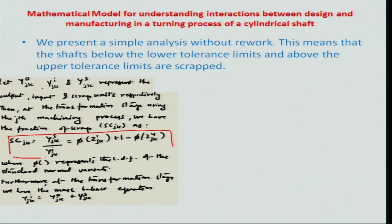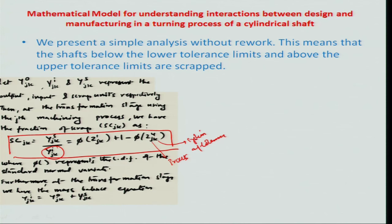This scrap fraction is the fraction of the input — how much scrap is generated relative to how much input there is. For the particular case here, we are talking about the j-th process and the k-th tolerance system. That is how we modeled this, and we further created a material balance equation at the transformation stage: the input side combines with the process to give an output, plus a scrap output. The output and scrap combined together should equal the input number of units going into the process.